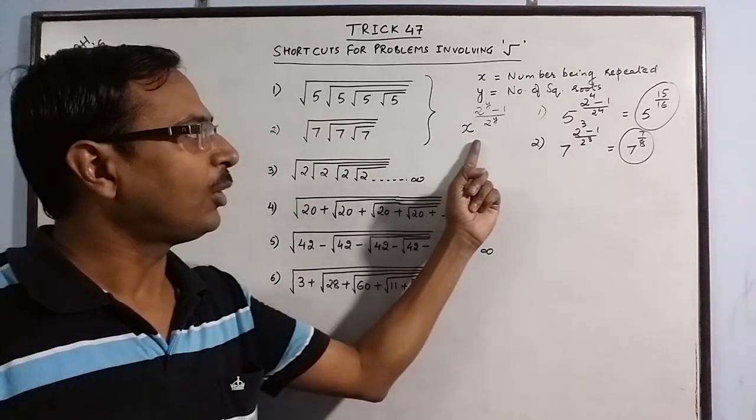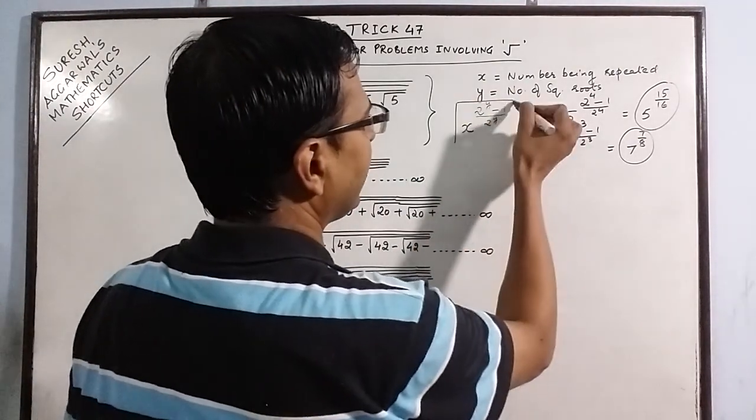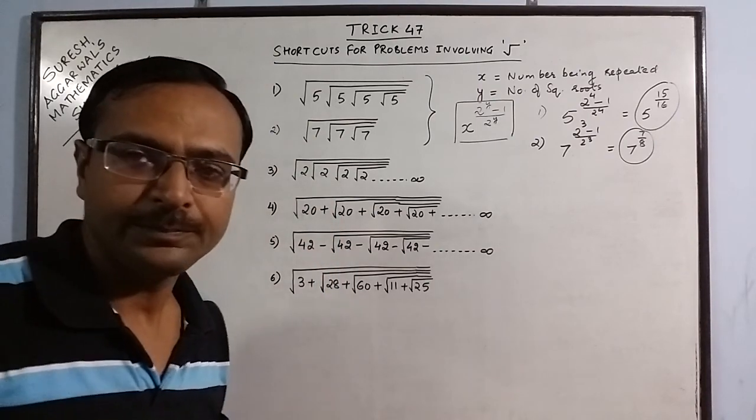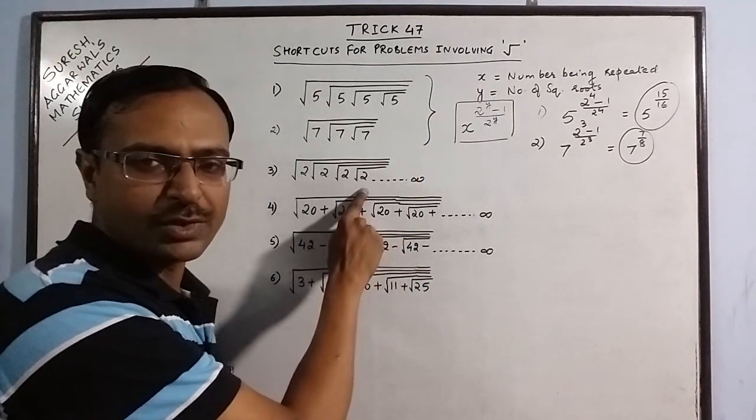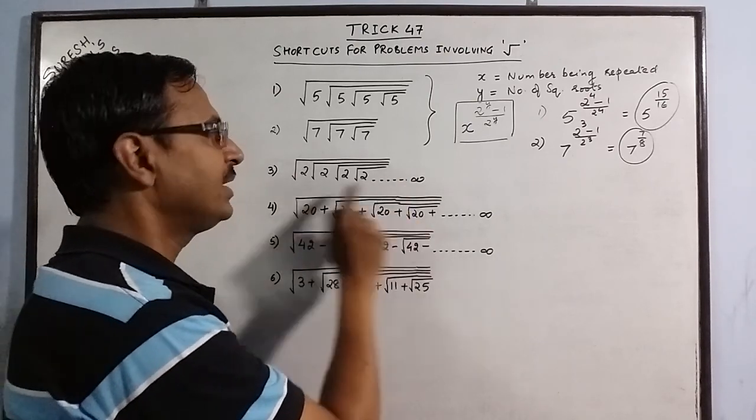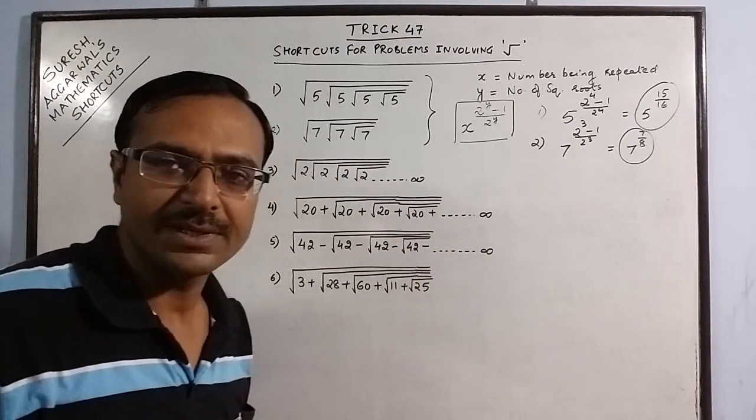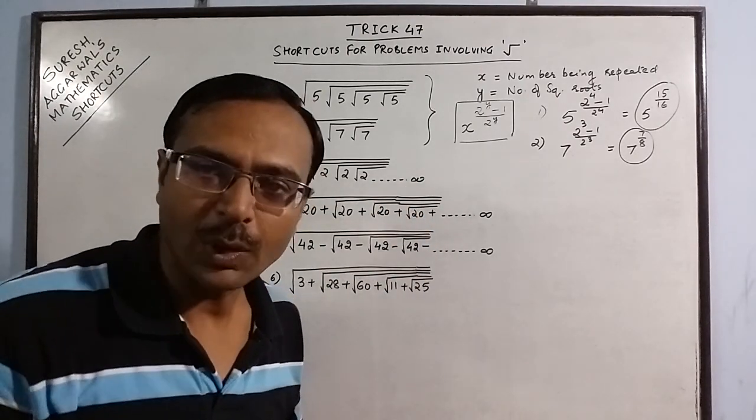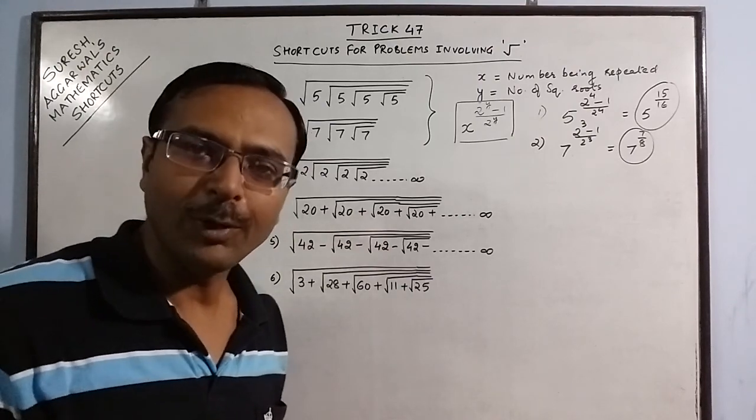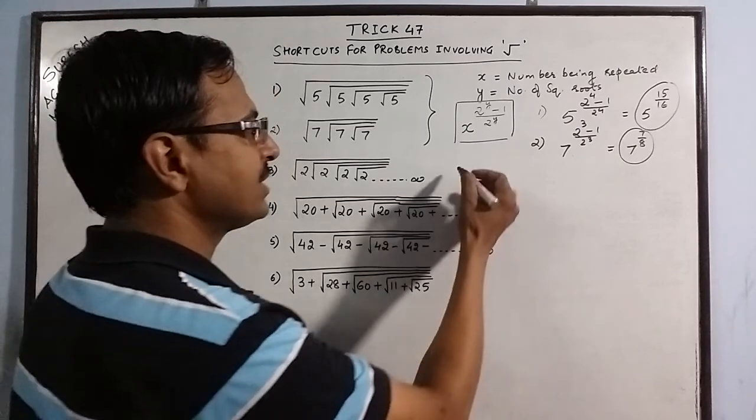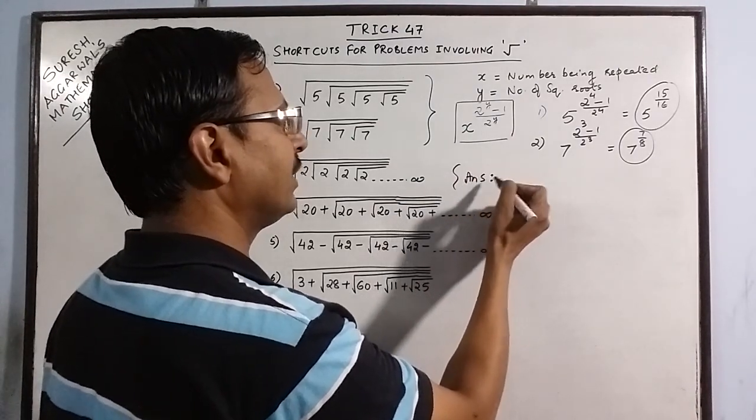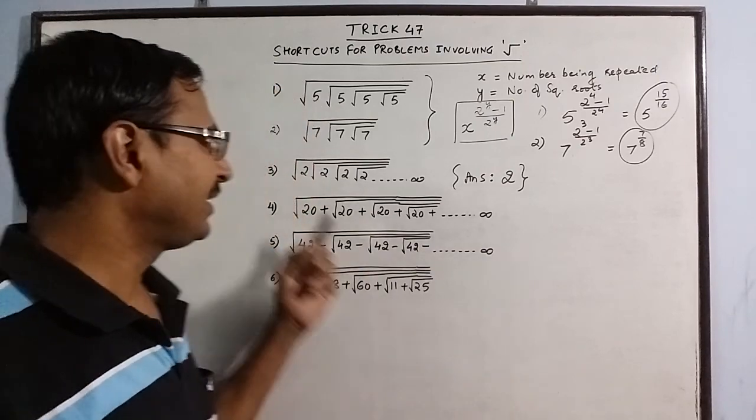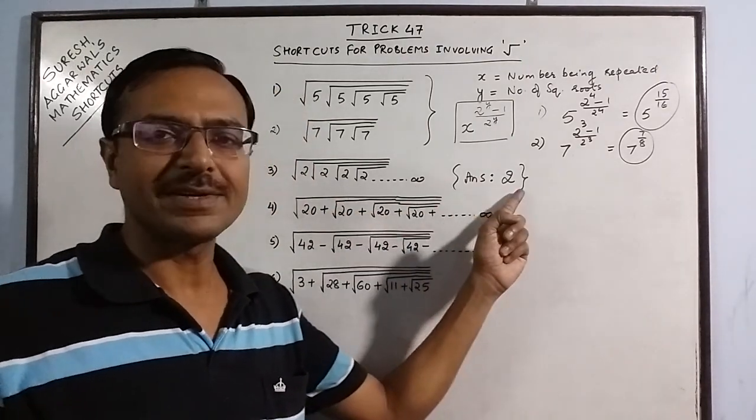This small formula if remembered can help us find the answer of this problem in just about 2 seconds. Coming to another one, we have the same sequence repeating square roots of a number, but here we have these square roots being repeated infinite number of times. When the square roots of the same number is repeated infinite number of times, it solves our problem. We do not have to apply any formula for finding the answer of this question. The answer of this question will be the number itself, the number which is being repeated.